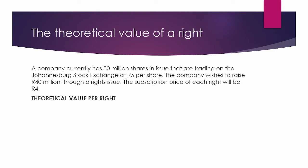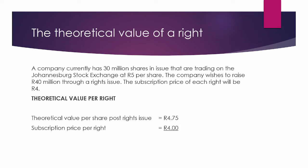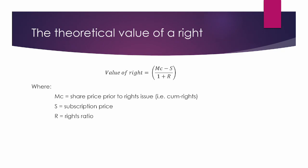By this stage, we have done all the hard work. We know that the theoretical value per share after the rights issue is 4 Rand 75 cents, and the subscription price of each right is 4 Rand. To get the theoretical value per right, we simply take the difference between the two to arrive at a theoretical value of 75 cents per right. Alternatively, we could use the formula shown on screen, which applied to our example again gives 75 cents per right.